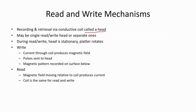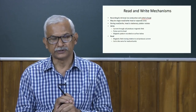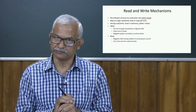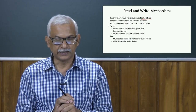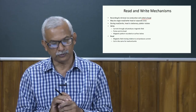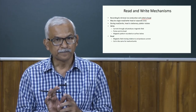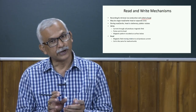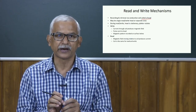In case of write: we pass current through the coil, which produces a magnetic field, and that magnetic field is captured in the magnetic material on that particular platter surface. Pulses are sent to the head to create the magnetic field, and that field is recorded as a magnetic pattern on the surface below. In case of read: the magnetic field moving relative to the coil produces current, and by looking at the direction of current we interpret the information we are retrieving. The same coil may be used for both read and write, or we may use separate mechanisms.